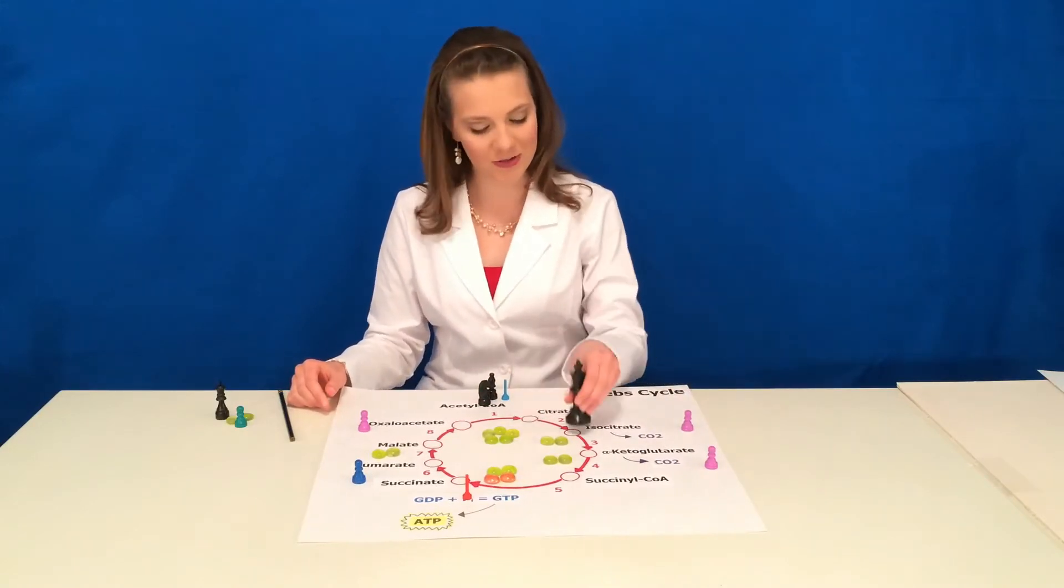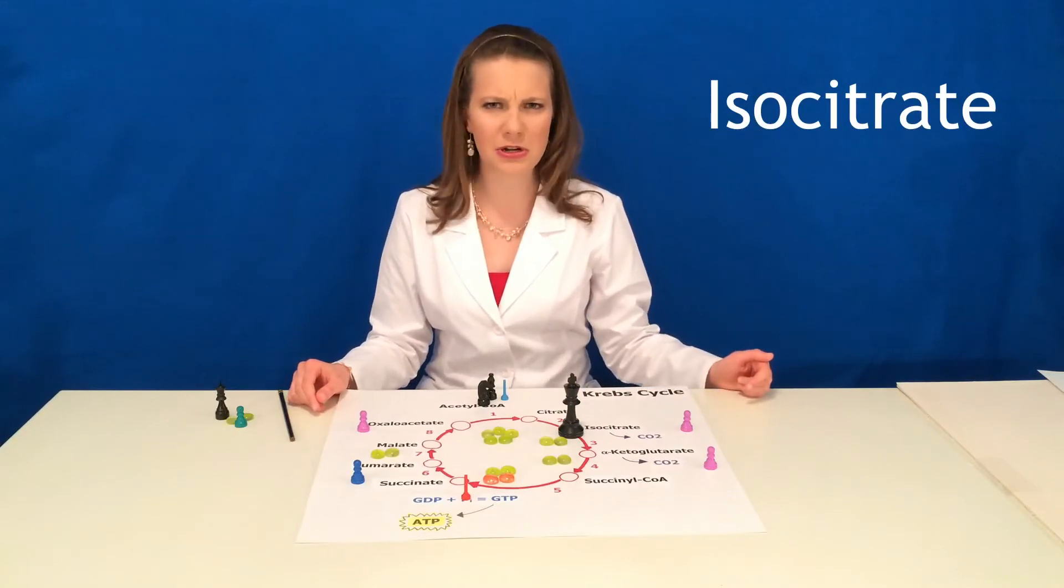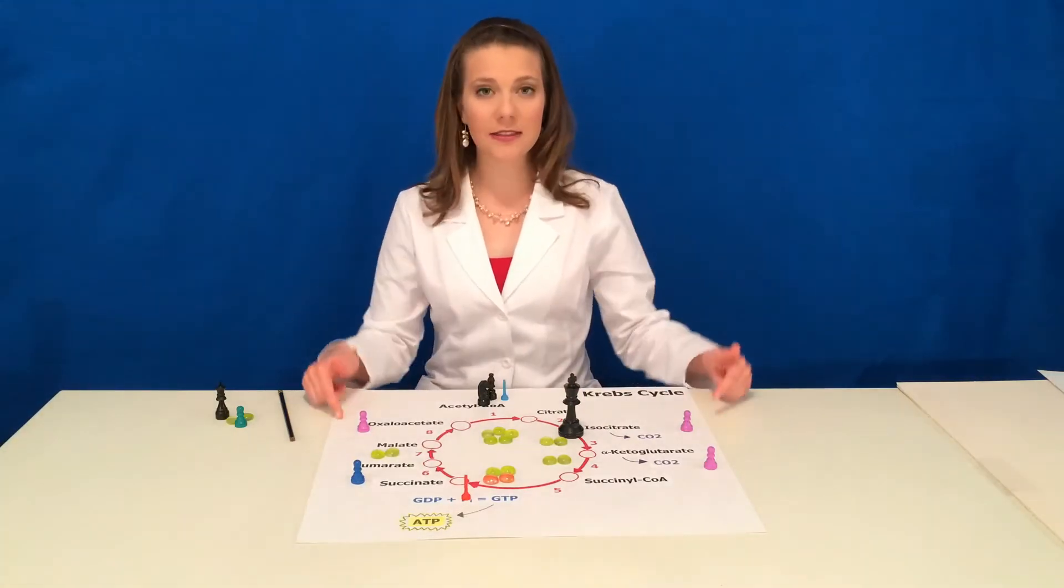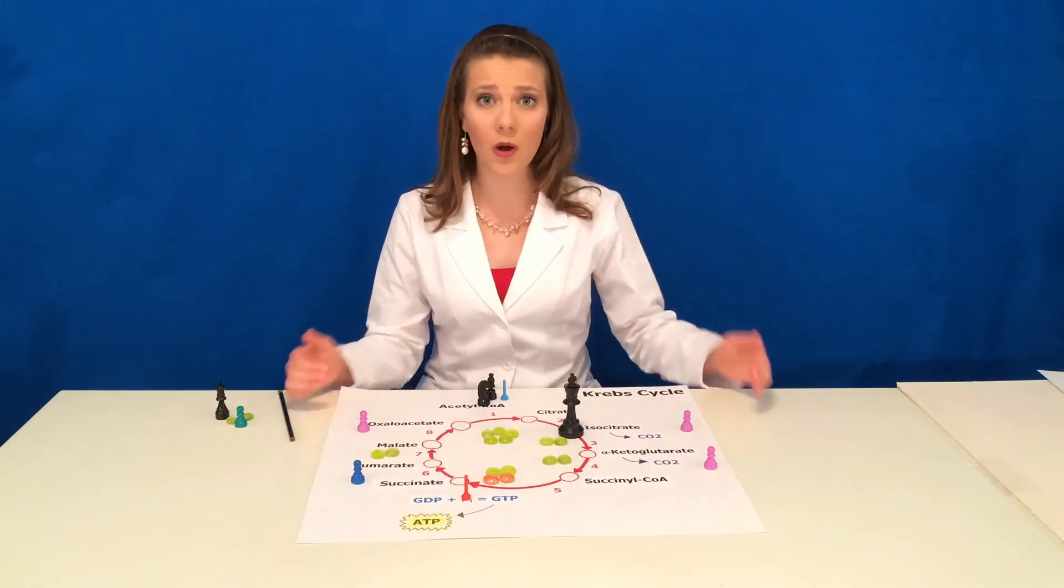In step two, water transforms citrate into its isomer called isocitrate. Now think of isocitrate as the king, and these guys over here are the starving paupers who want his electrons.